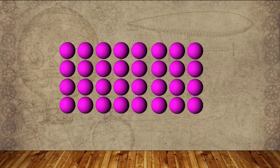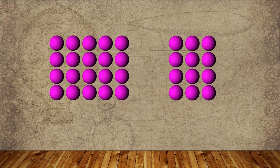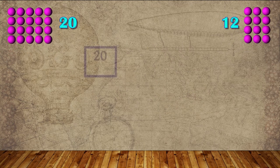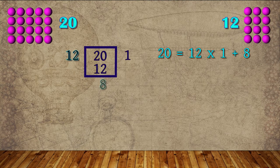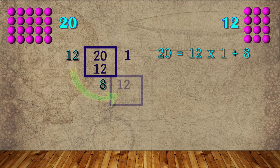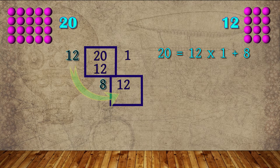Again consider the example of 20 balls. Find the HCF of 20 and 12. Dividing 20 by 12, we get 1 as quotient and remainder will be 8. Now repeating the division by taking 12 as dividend and 8 as divisor,